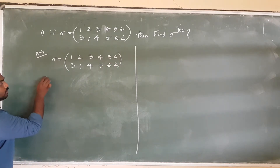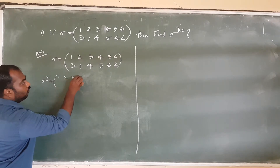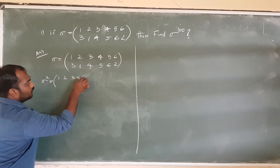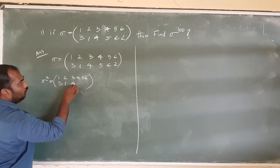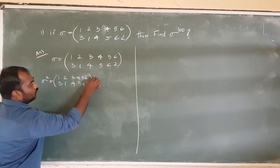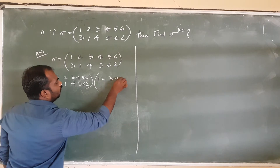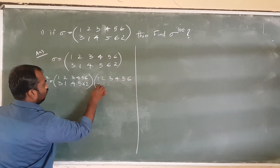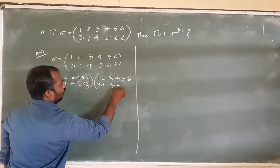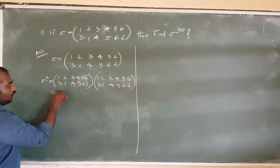Now sigma squared. Sigma squared is sigma times sigma — sigma 1, 2, 3, 4, 5, 6 mapped to 3, 1, 4, 5, 6, 2 — into sigma: sigma we go, 3, 1, 4, 5, 6, 2. I'm going to multiply as well.